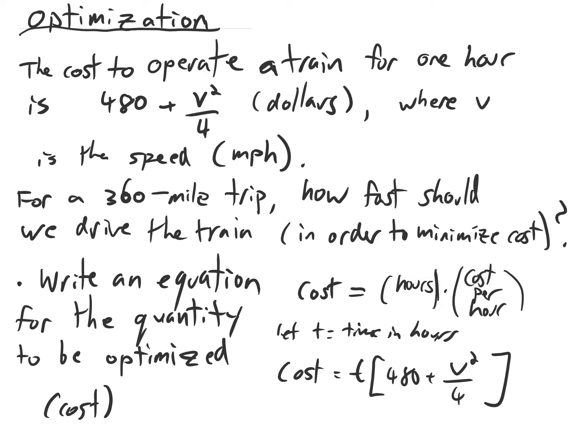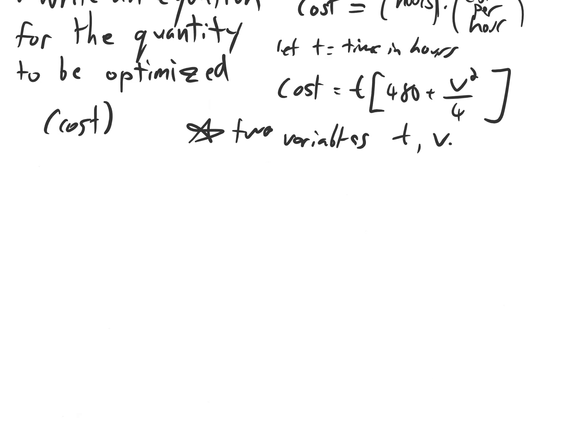This is progress but there's an issue. There are two variables in this, t and v. We want to rewrite this equation as a function of just one variable so that we can use some calculus on it. We have cost is t times 480 plus v squared over 4 but this has two variables. We need to rewrite this expression with just t or just v as the variable.